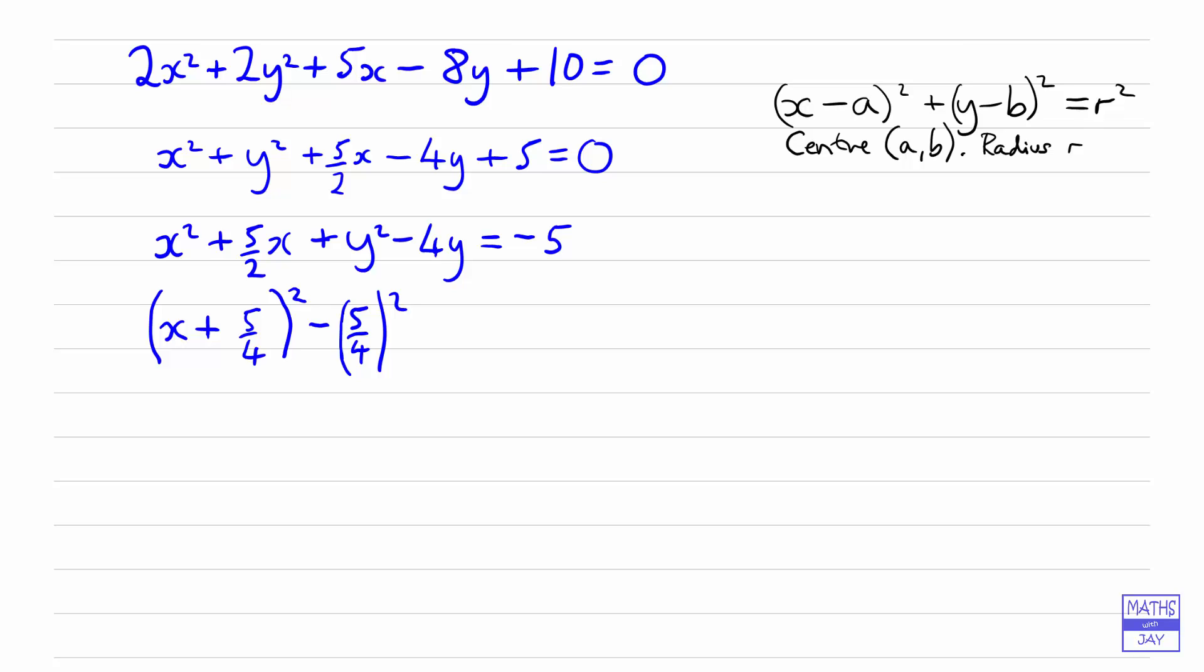And now we need to do the same sort of thing with the y squared minus 4y, so we're going to have something or other all squared minus something or other, so we're going to have y and then halving negative 4 will give us minus 2 in there and when we square that out we'll find that we've added on an extra 2 squared so we've got to take away the 2 squared and then that will give us, as before, minus 5.